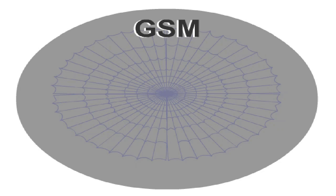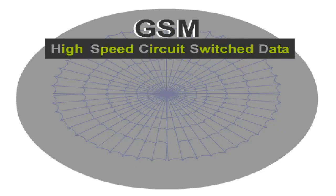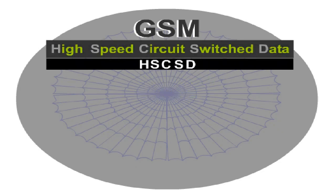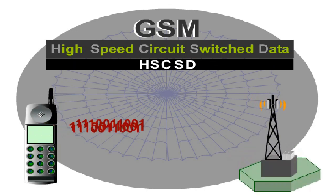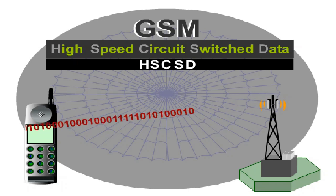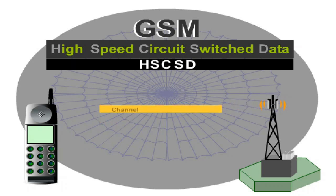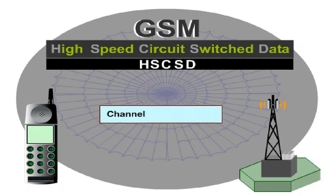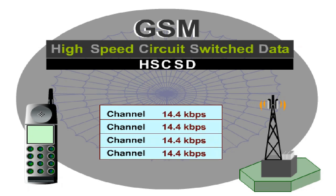One extension of the GSM standard is High-Speed Circuit Switched Data, HSCSD. This innovation gives the bit rates an enormous boost. HSCSD is circuit switched and optimizes the existing transmission rates in two respects. Firstly, a new channel coding method available in GSM Phase 2 Plus in single-circuit switched data increases the data rate from 9.6 kilobits per second to 14.4. Secondly, the bundling of up to four time slots can increase the user data rate to 57.6 kilobits per second.